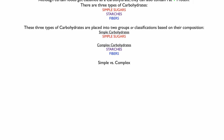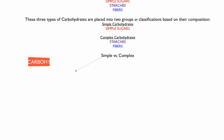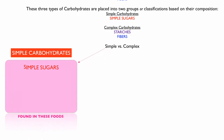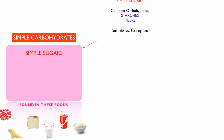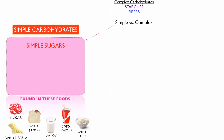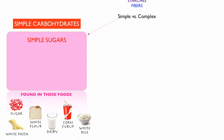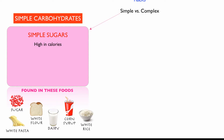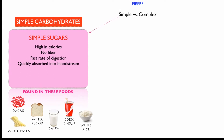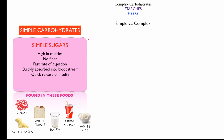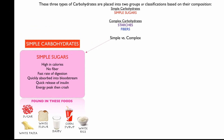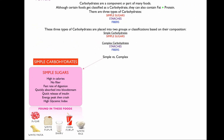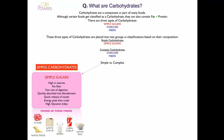Simple carbohydrates include the simple sugars, which are found in foods like sugar, white pasta, white flour, dairy, corn syrup, and white rice. Simple sugars tend to be high in calories, have no fiber, and have a very fast rate of digestion. Therefore, they're quickly absorbed into the bloodstream and have a quick release of insulin. They provide an energy peak and then a crash, and they tend to be very high on the glycemic index.